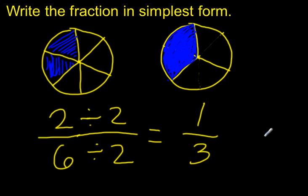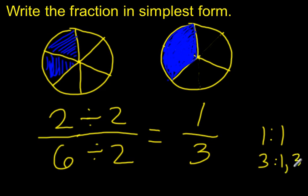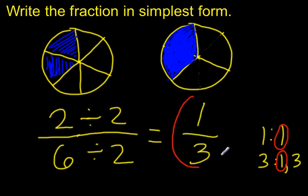I can verify by looking at the factors. The only factor of 1 is 1. The factors of 3 are 1 and 3. The only factor they have in common is 1. When the only common factor is 1, you know that fraction is in simplest form, because it has the fewest number of pieces and the only common factor is 1.